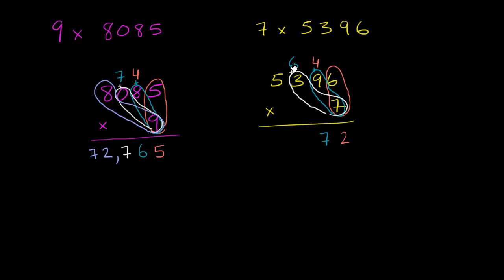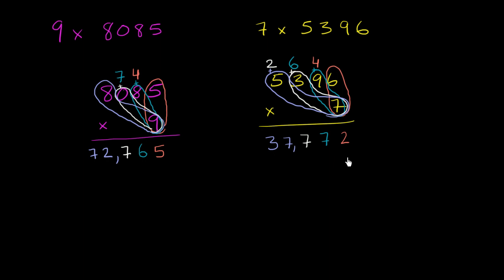Then we have 7 times 3, plus the 6 we just carried. 7 times 3 is 21, plus 6 is 27. We write the 7 in the hundreds place and carry the 2. And finally, 7 times 5 is 35, plus 2 is 37. So 5,396 times 7 is 37,772.